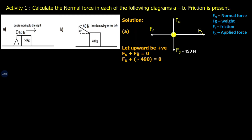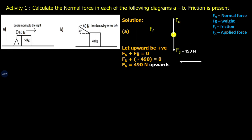The normal force minus 490 equals zero, giving us the normal force equals 490 Newtons in the upward direction. So the downward press was 490 Newtons and the upward reaction was also 490 Newtons.